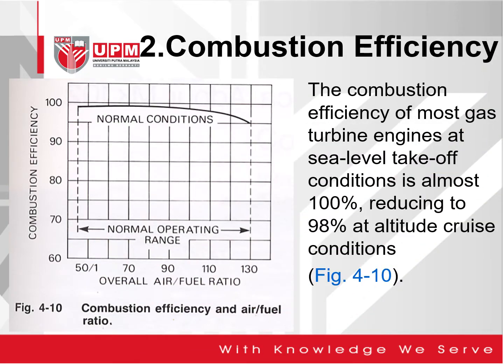The second aspect of performance is combustion efficiency. The combustion efficiency of most gas turbine engines at sea level takeoff condition is almost 100%, and it will reduce to 98% at altitude cruise conditions. We normally use this particular chart to predict combustion efficiency at the operating range, and this chart also looks into the overall air-fuel ratio.